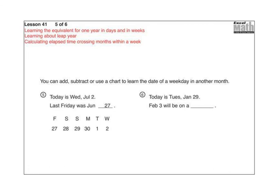Alright, here we go with some calendar problems where we're crossing over from one month to another one. It says you can add, subtract, or use a chart to learn the date of a weekday in another month. So today is Wednesday, July 2nd, last Friday was. What they did was they drew Wednesday over here. We're going backwards. Wednesday was the second. Then they made a calendar that goes back to Friday. Tuesday, Monday, Sunday, Saturday, Friday, and then filled in the dates. And you have to know that June has 30 days only so that you know to write a 30 there and not a 31.